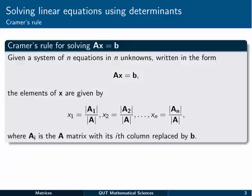So here's how it works. Cramer's Rule for solving Ax equals b. Given a system of n equations in n unknowns, so first of all that's an important point to note. We have to have a square system.